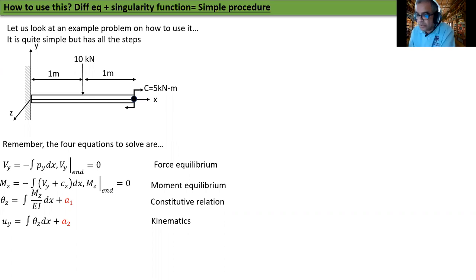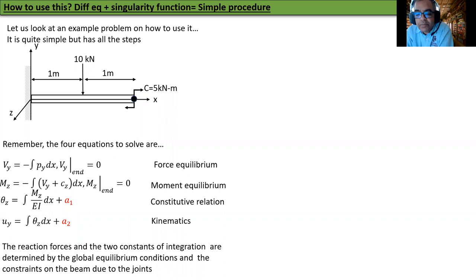The reaction forces and moments and the two constants of integration are determined by global equilibrium conditions and the constraints on the beam due to the joints. In this case, there's a welded or fixed joint at x equal to zero.